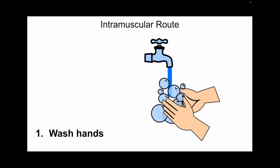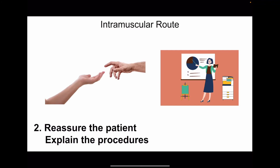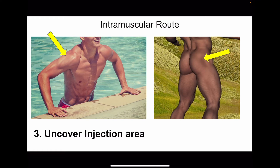The first step is to wash your hands. Following that, the second step is to reassure the patient and explain the procedure calmly. The third step is to uncover the injection area. The most common areas chosen for the intramuscular route include the deltoid muscle.